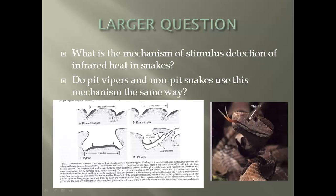Their larger question was: what is the mechanism of stimulus detection of infrared heat in snakes? And likewise, do pit vipers and non-pit snakes use this mechanism in the same way? On the right you see the picture of a pit viper with the pit clearly pointed out, and on the left you can see how the internal structure of that pit in the pit viper is quite different in development from the others. Pit vipers have both an outer chamber and an inner chamber and what they call a pit membrane.